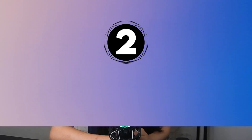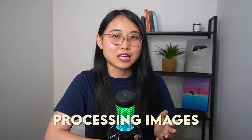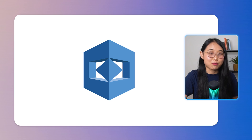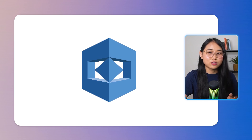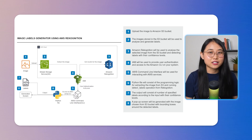Project number two is to build an image labels generator using Amazon Rekognition. This project is a fun one because we'll be processing images and labeling them. For example, if you have a photo of a cat, Amazon Rekognition will be able to identify what it is and label the image as a cat. I have the complete guidebook for all five projects in the description below, but here's the architectural diagram and the overall steps you'll need to take.